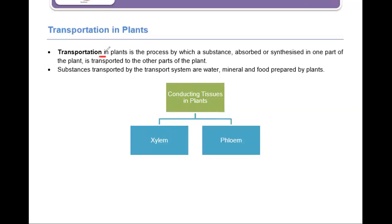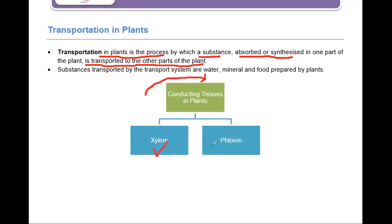Transportation in plants is a process by which a substance absorbed or synthesized in one part of the plant is transported to other parts of the plant. In transportation, two types of conducting tissues are involved: the first type is xylem and the second type is phloem.